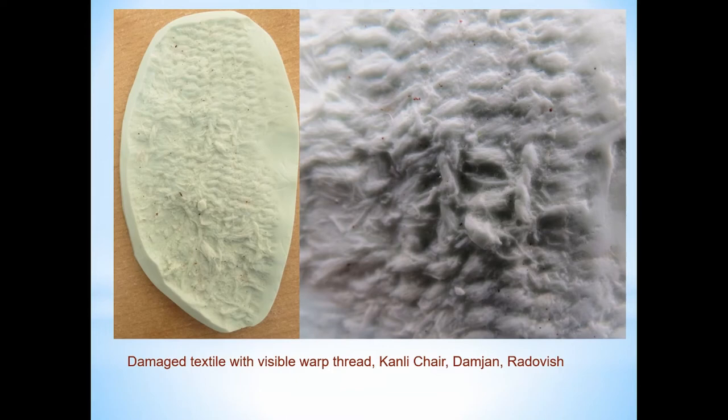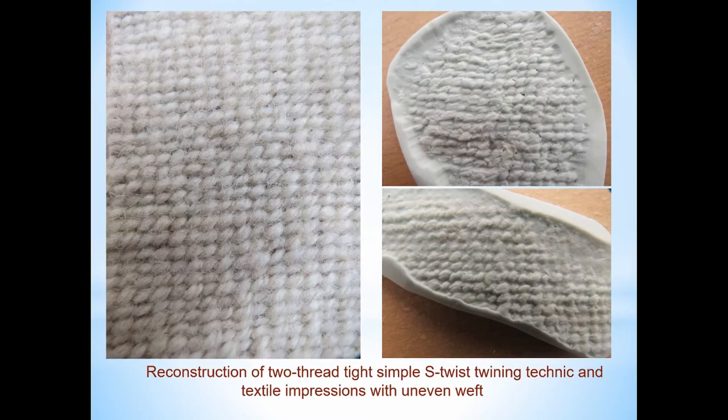The warp is not visible on the impressions. The only information we have for the warp comes from impressions where damaged parts are visible. We can see that the warp is made from two S-twist yarns with a diameter of 1 mm. Unlike the warp, the weft is clearly visible. The thickness of the weft ranges roughly from less than 1 mm to 3 mm in diameter.